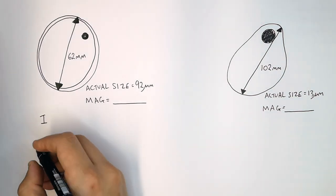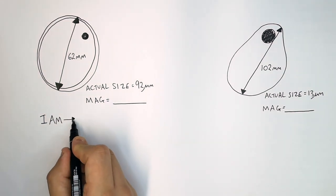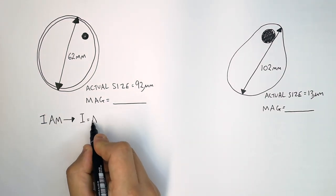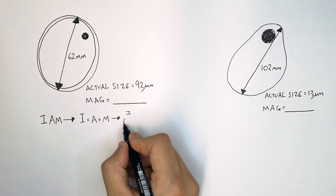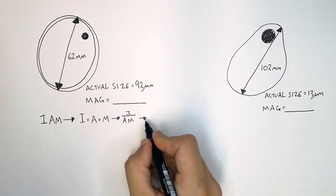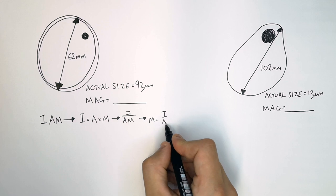First thing you do is you write I, A, M. Then you put the equals between the I and the A, and the times between the A and the M. Then you make the triangle, I over A times M. Then you make M the subject, M equals I over A.